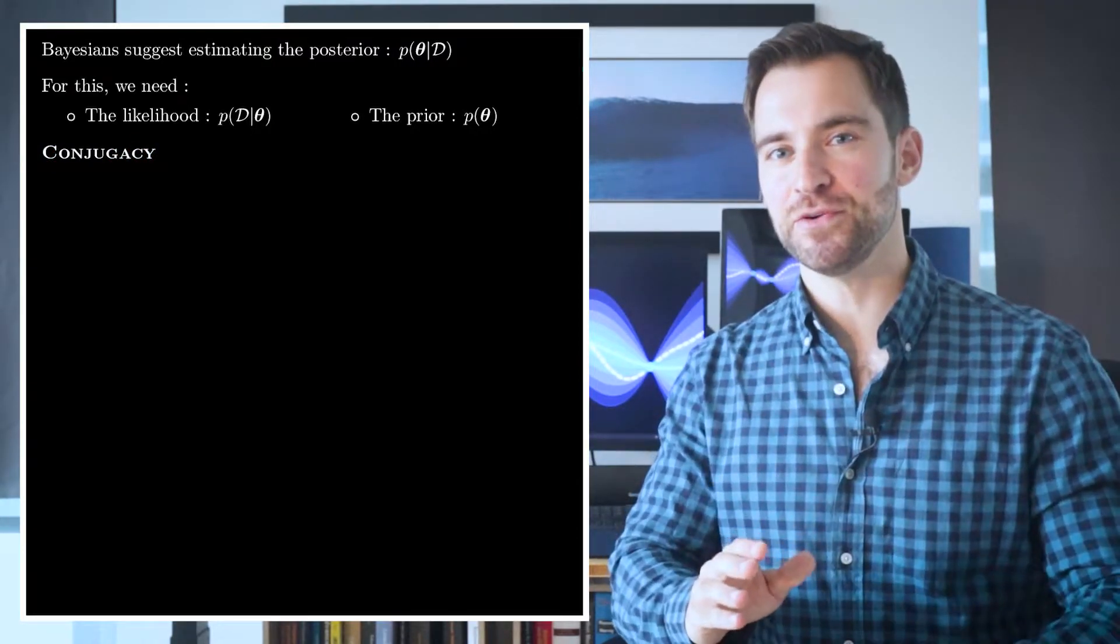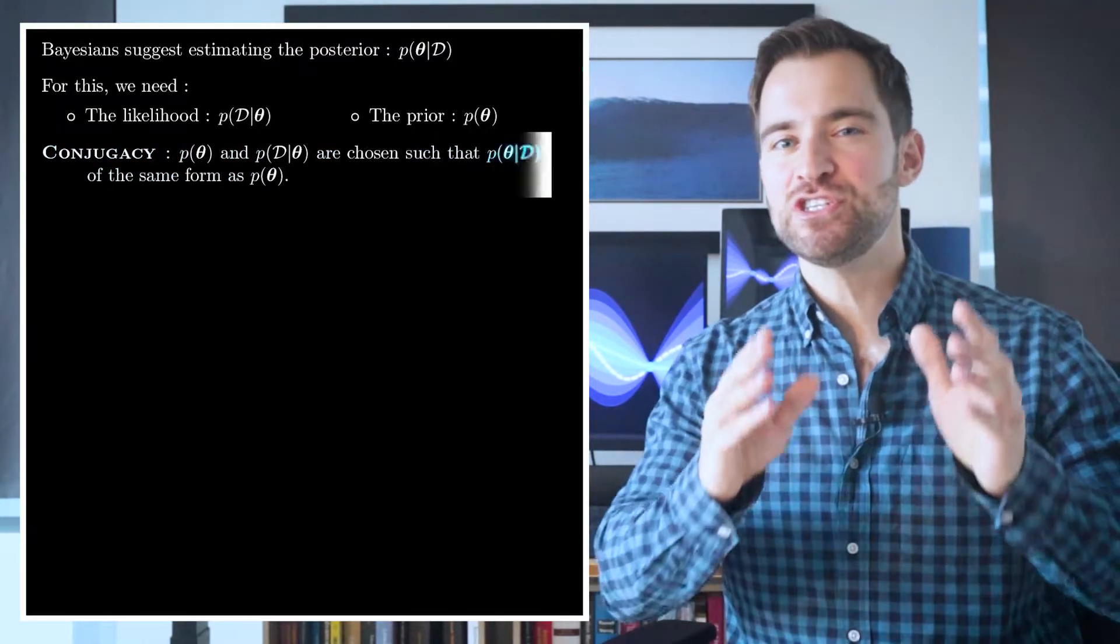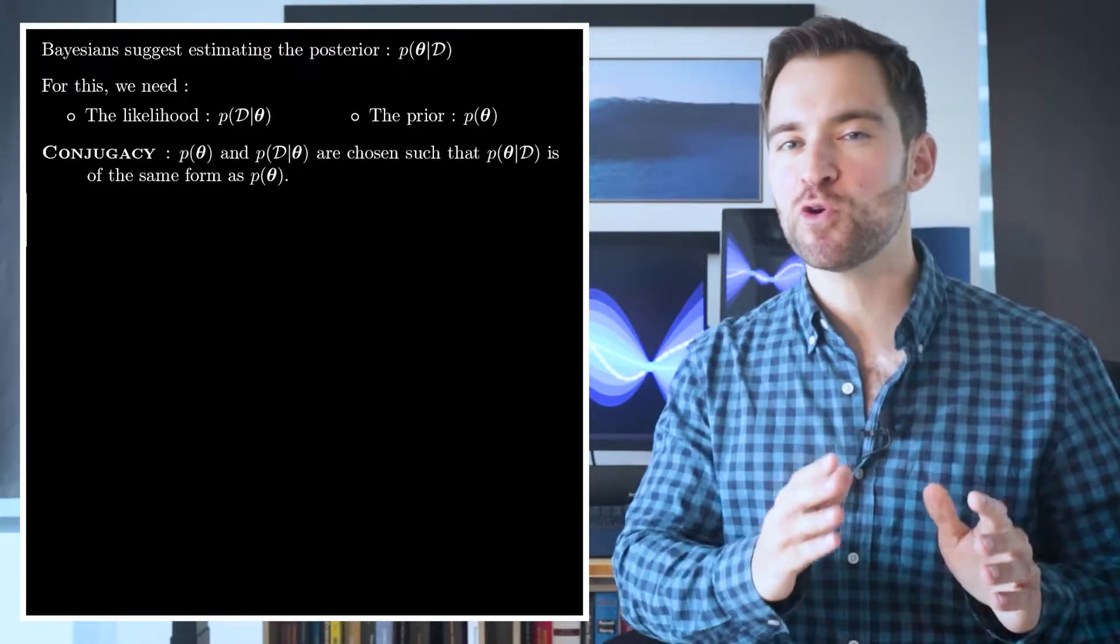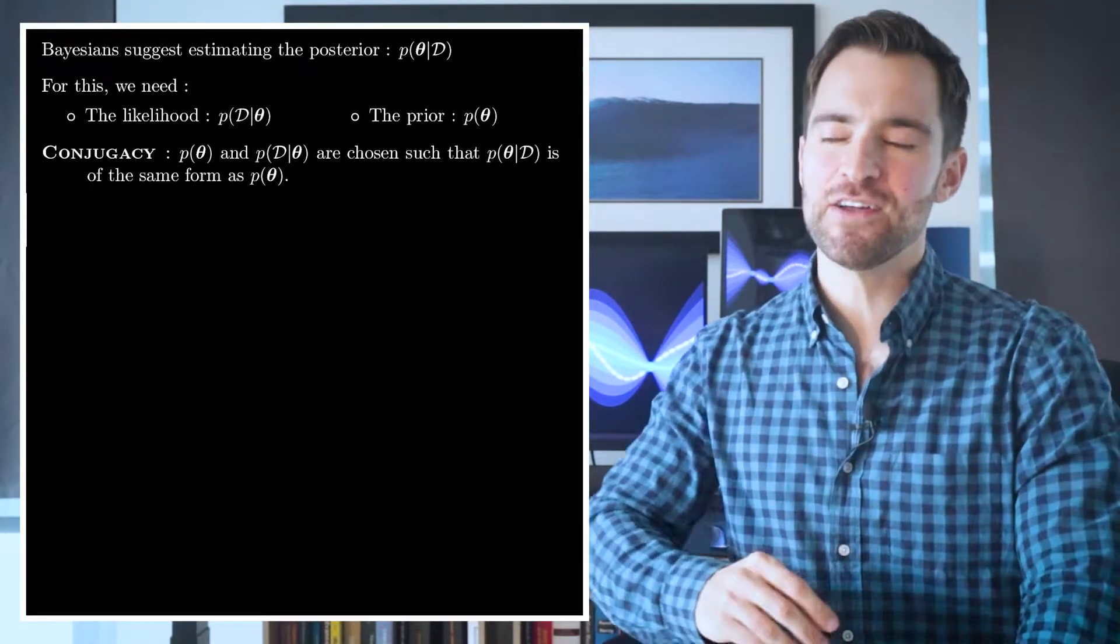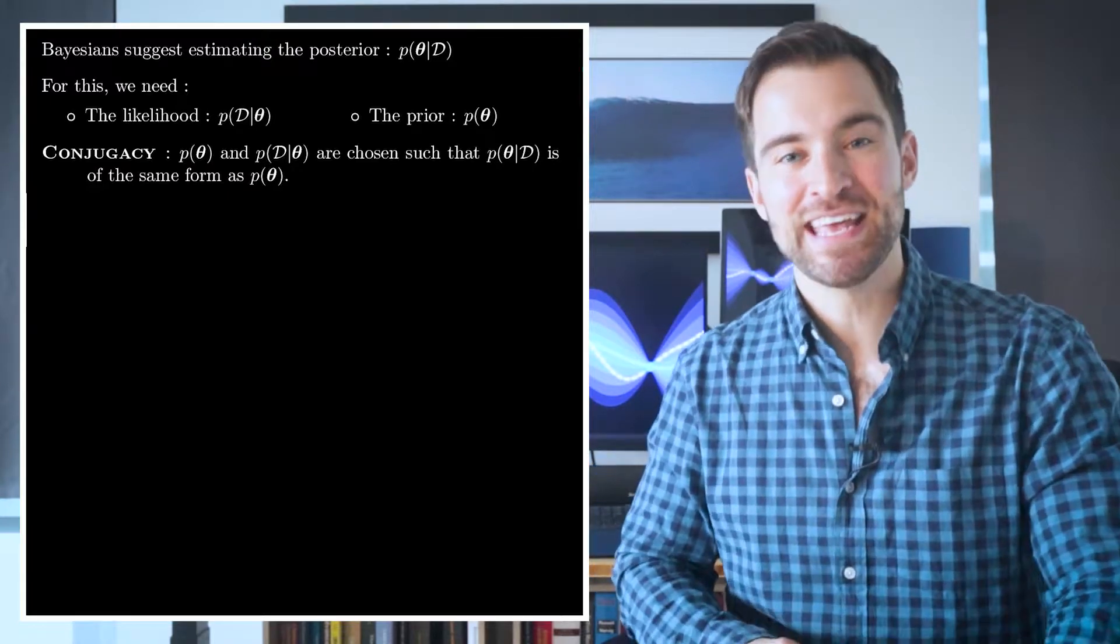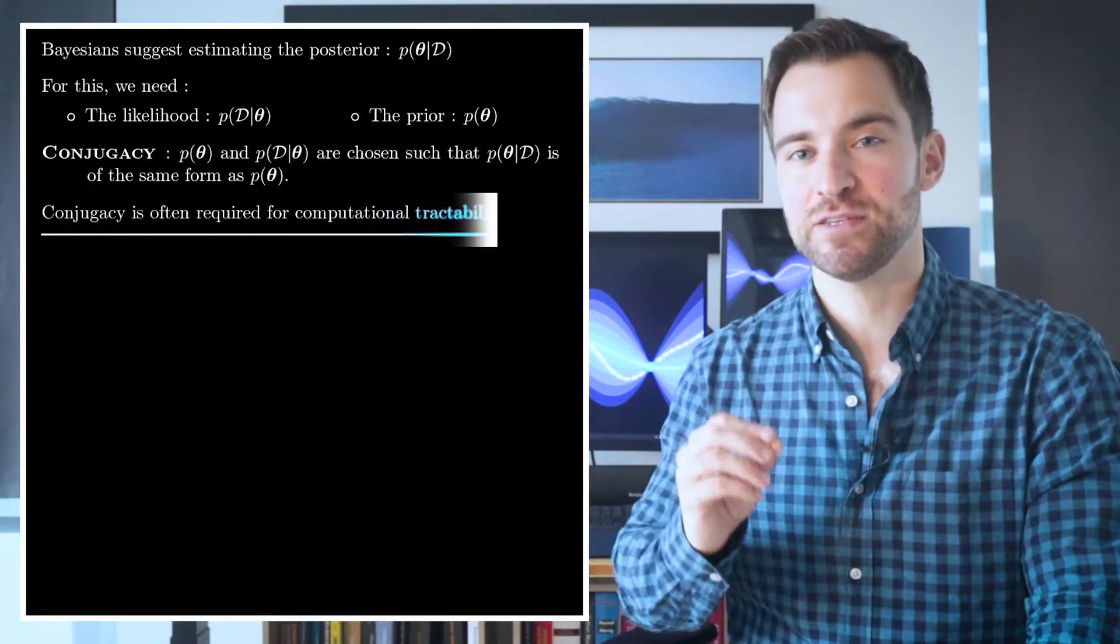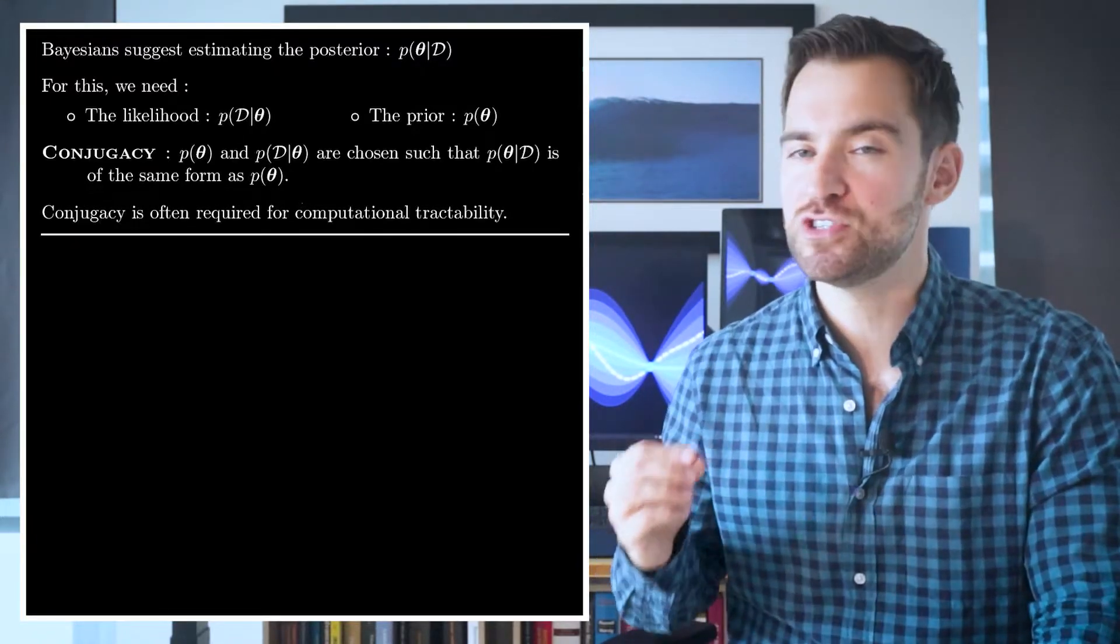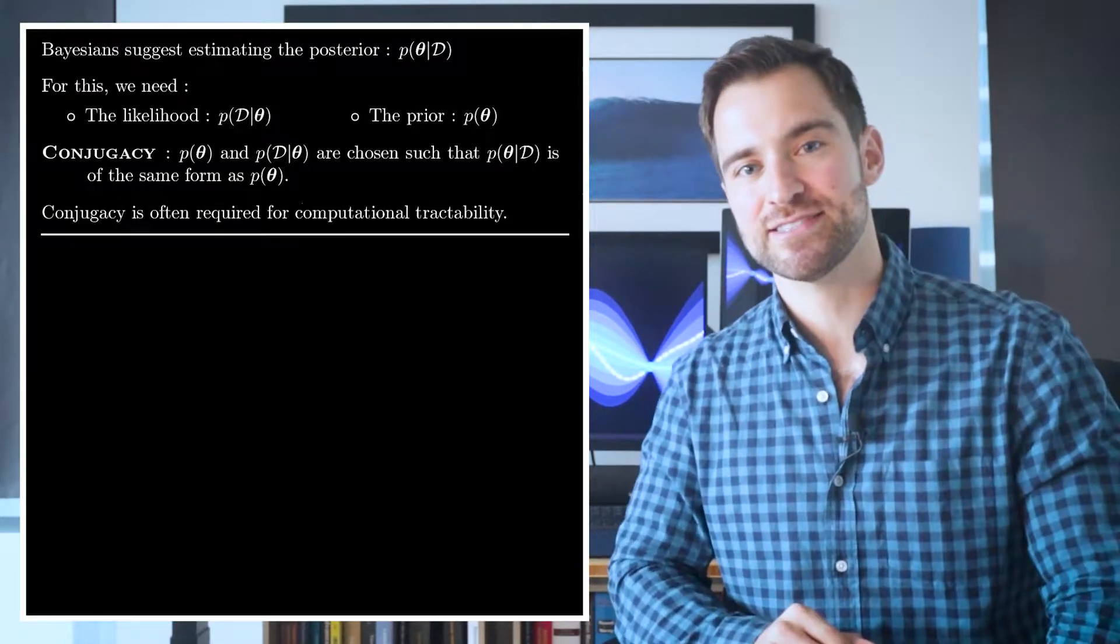Conjugacy. First, I'll define it for you. Conjugacy means that we choose the prior and the likelihood, such that the posterior is of the same form as the prior. It turns out this is a super important property. It's here for computational tractability. Otherwise, you may find yourself needing to sum over a ridiculously huge space, which would stop you in your tracks.